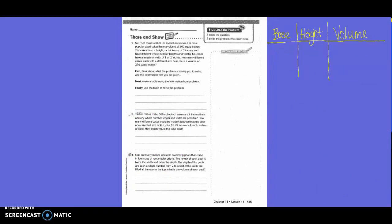Share and show. Mr. Price makes cakes for special occasions. His most popular sized cakes have a volume of 360 cubic inches. The cakes have a height of 3 inches and have different whole number of lengths and widths. No cakes have a length or width of 1 or 2 inches. How many different cakes each with a different size face have a volume of 360 cubic inches? First, think about what the problem is asking you to solve and the information that you are given. Next, make a table using the information from the problem. Finally, use the table to solve the problem. So basically, we know in this case every single height is 3. That's never going to change. And our number out here in our base can never be a 1 or a 2.